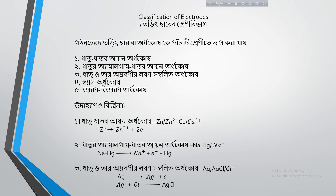First, we have the metal–metal ion electrode, that is, a metal in contact with a solution of its own ions. If a zinc plate is dipped into a solution, a zinc half-cell is formed. Here we can see that if a copper plate is dipped into a copper ion solution, a copper half-cell is formed.